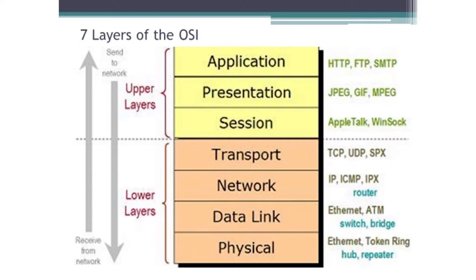The data link layer is just an encapsulation protocol designed for communications in the local area. Between routers, there is a link of some kind — whether it's going to be a fiber cable, a copper cable, radio frequency, microwave, or satellite communications. That particular link — the equipment between the two routers — has its own method of communicating.